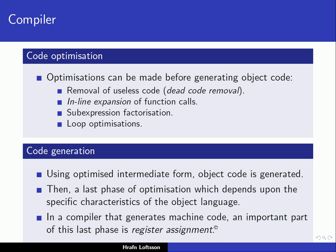One important part of code generation, when generating machine code, is for the compiler to decide what values are put in registers. This has a significant effect on the efficiency of the generated code. For these processors, operations are done on values kept in registers, so if we're doing a lot of operations on particular variables, it's important that the values for those variables are kept in registers.